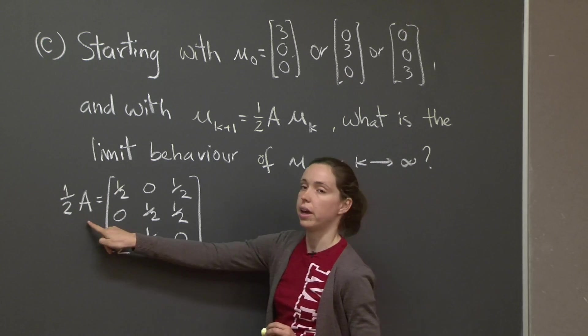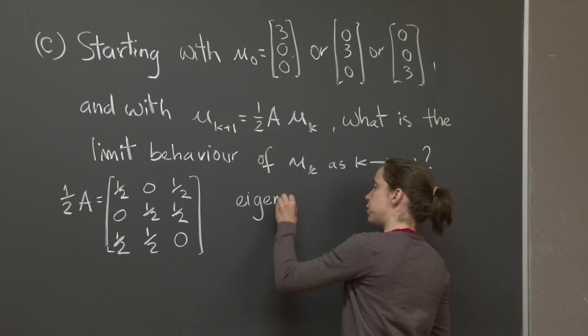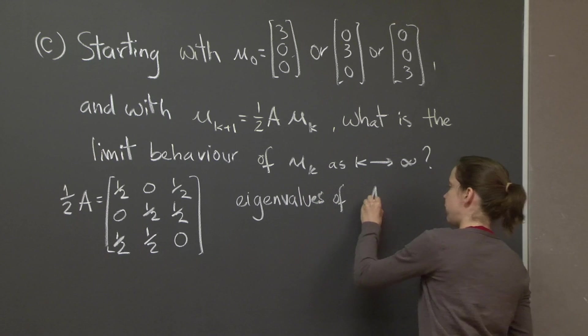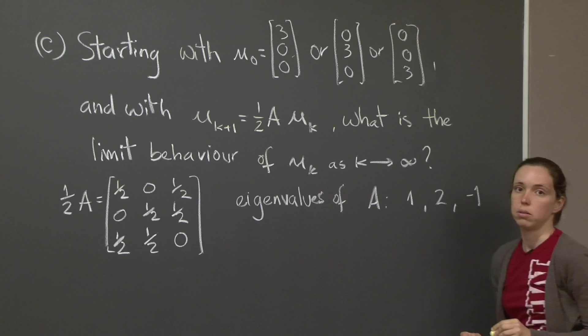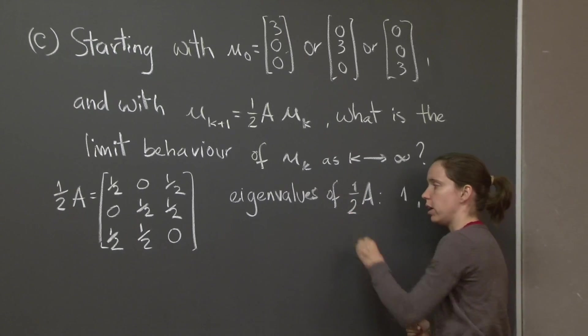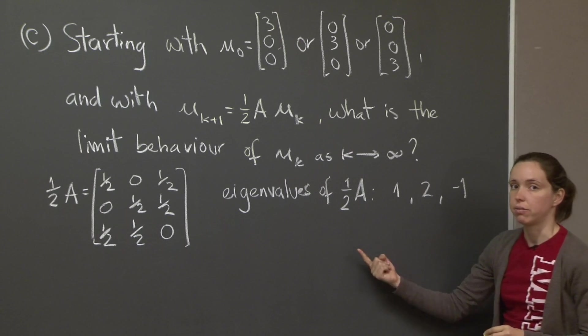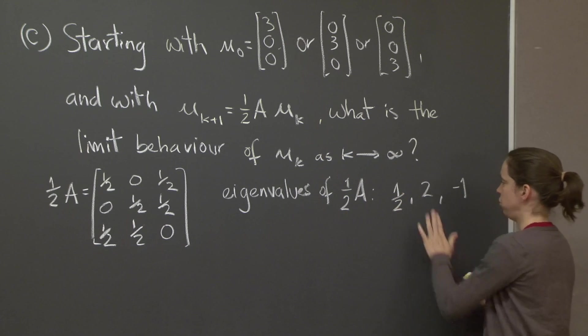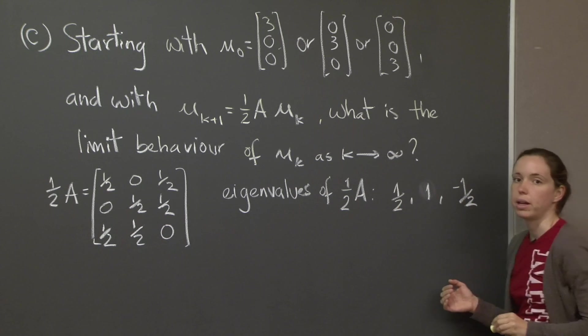What are the eigenvalues of A, of one half of A? Well, if you remember from part A, the eigenvalues of A were 1, 2, and minus 1. So the eigenvalues of 1 half of A, taking a multiple does not change the eigenvector, but it changes the eigenvalue by the same multiple, will be 1 half, 2 divided by 2 is 1, and minus 1 half.